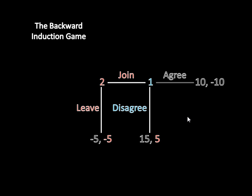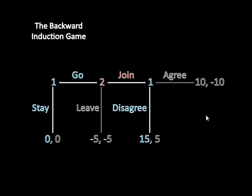So player two would not want to leave here because negative five is worse than five. If player two joins, then player one disagrees and she ends up with five. Now player two might want to leave if she thought that player one would agree here, because that would leave player two with negative 10, which is much worse than negative five. But there's just no reason why player one would do that. So we've replaced this payoff with this Nash equilibrium payoff, and knowing that, we can see that player two would not want to leave — she would want to join, and then that would cause player one to disagree.